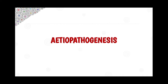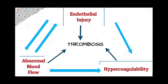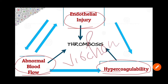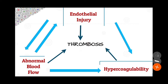Now we will start with the etiopathogenesis, which is the most important portion of thrombosis. There are mainly three important abnormalities that lead to thrombosis: first, endothelial injury; second, abnormal blood flow; and third, hypercoagulability. All three are interlinked to each other.